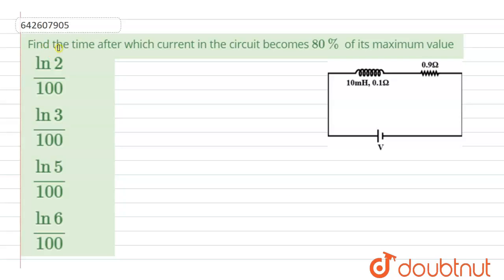Hello everyone. The question says: find the time after which the current in the circuit becomes 80% of its maximum value. So in this question I have to find out that time. Now suppose a current I is flowing in the circuit. This is an LR circuit.